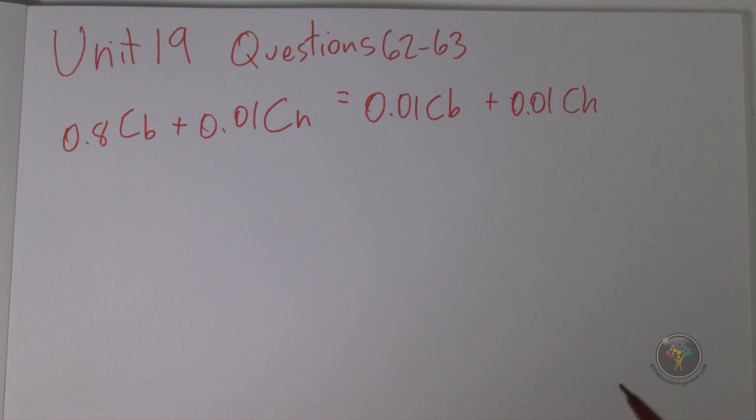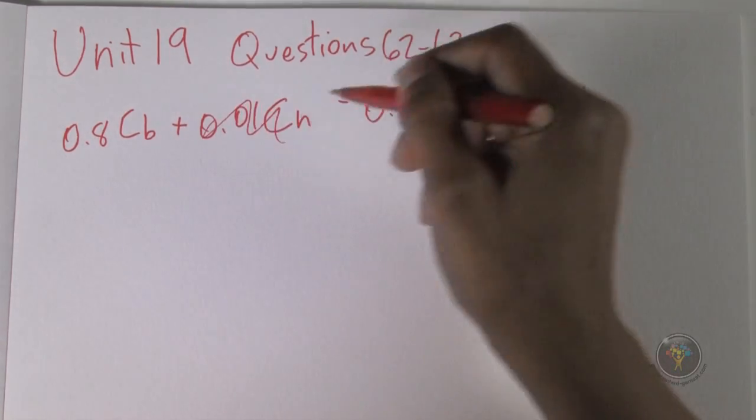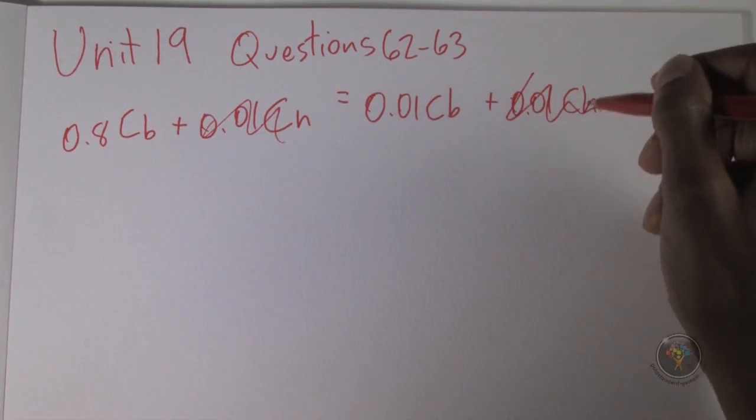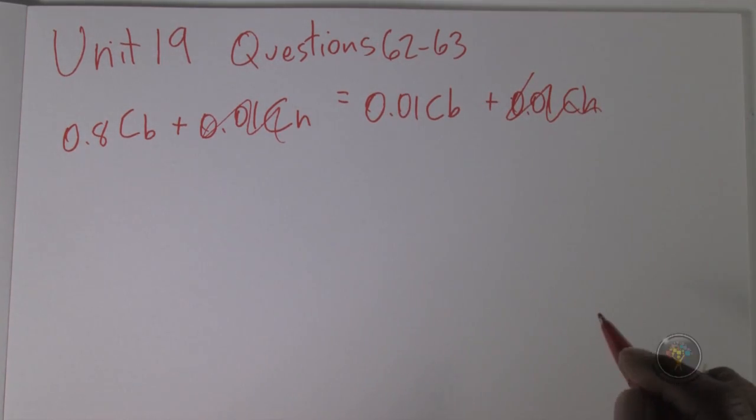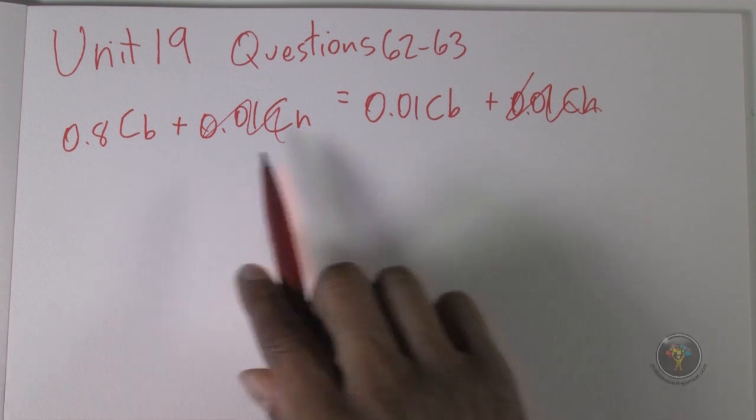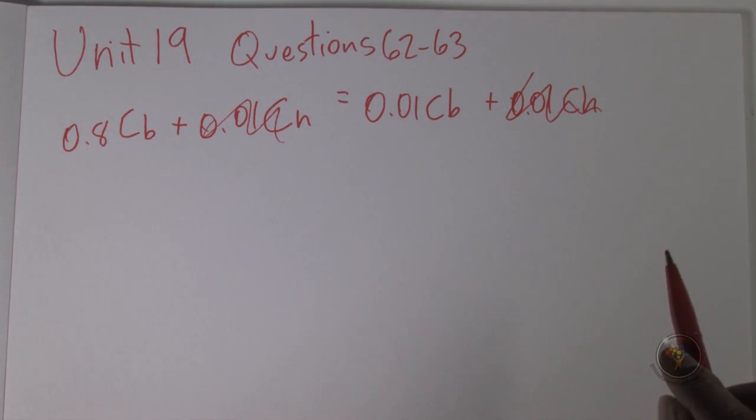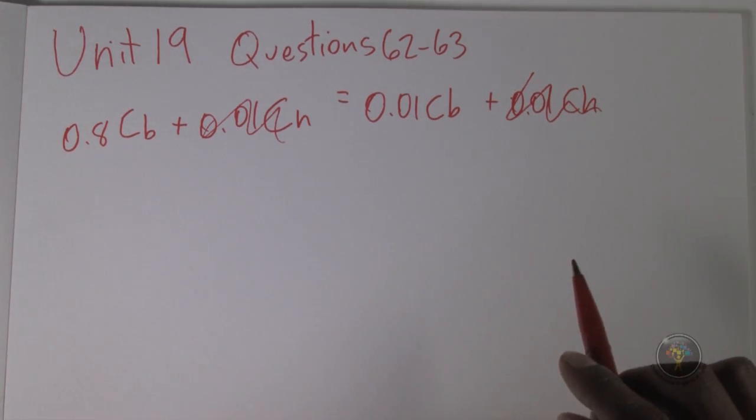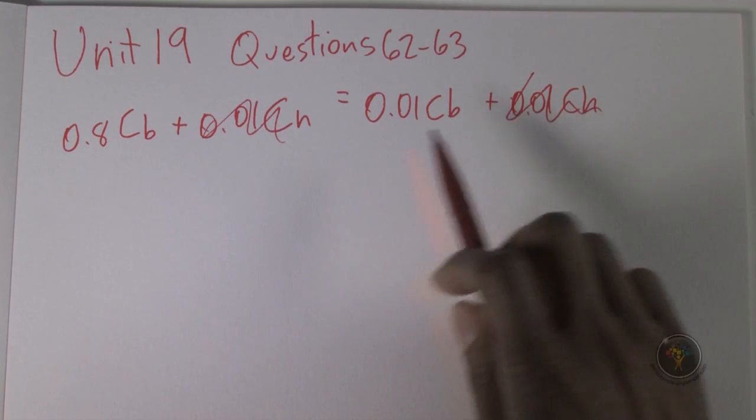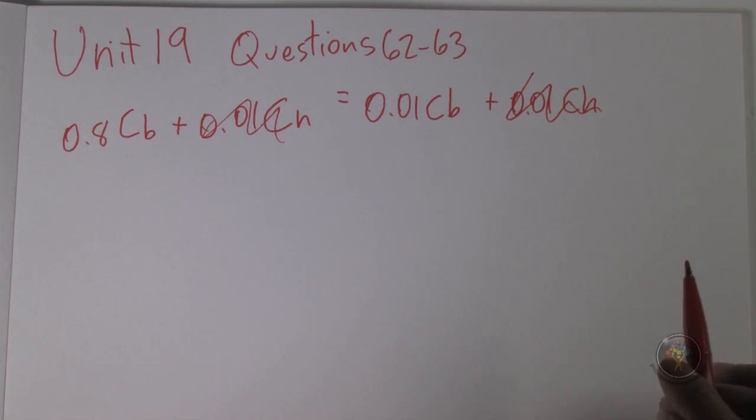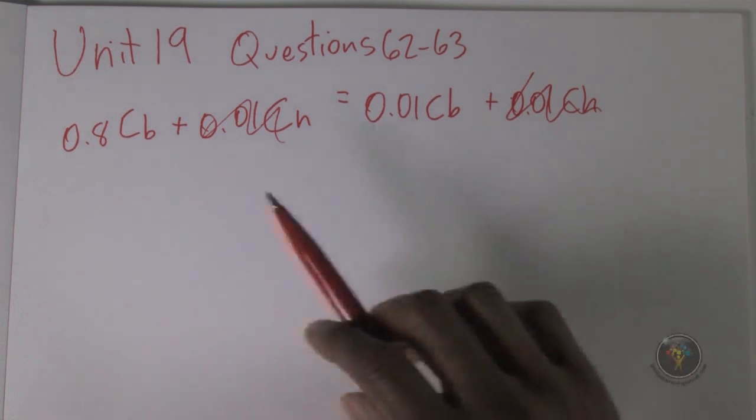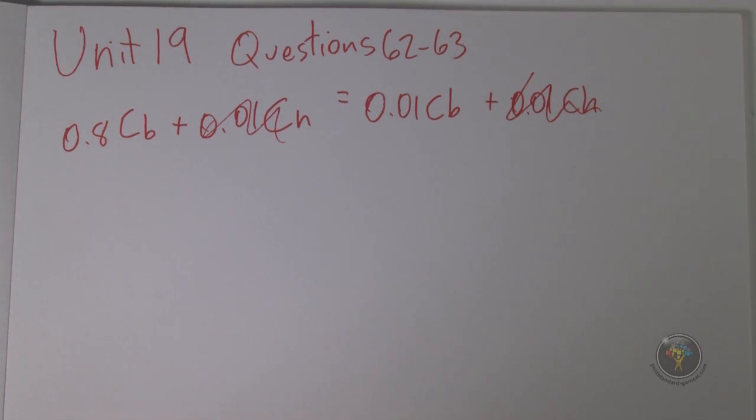That's equal to 0.01 CB plus 0.01 CH. I'm just plugging in the values that have been given. 0.01 CH can cross out with 0.01 CH. We subtract the same number from both sides. Now we're left with 0.8 CB equals 0.01 CB. There's no number that can permit that to be true except if CB equals 0. Then 0 equals 0, but besides that it's impossible. CB must equal 0.